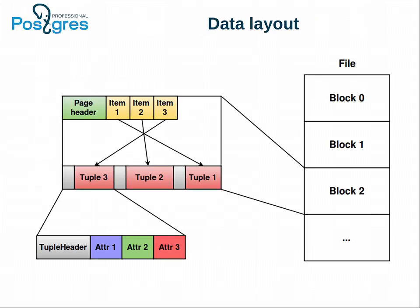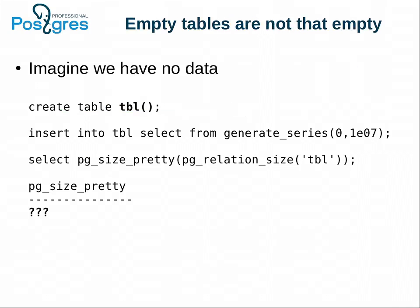Postgres has row-oriented storage. The physical representation of a row is called a tuple. A tuple consists of a header and attributes. Tuples are placed on pages, which in turn form the file. That is the format for all tables, indexes, and materialized views. Meta information takes some space — but how much exactly? Maybe it's not that much. Let's estimate it.